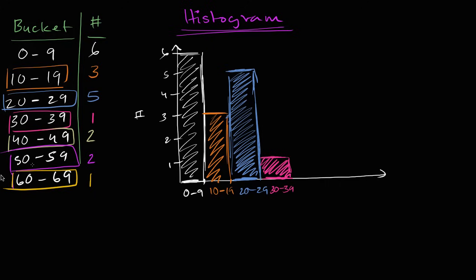And then we have 40 to 49. We have two people. 40 to 49, two people. So it looks like this. 40 to 49, two people. Almost there.